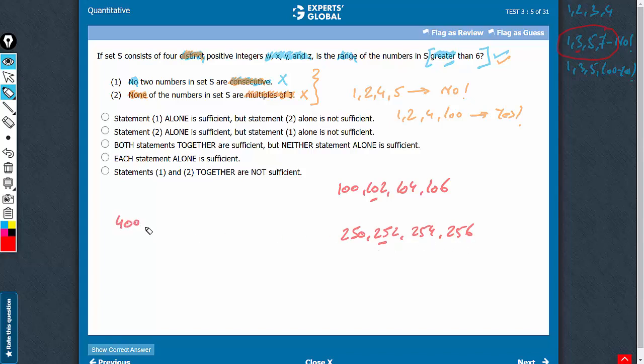For example, if we have 400, the next integer cannot be 401 because consecutive integers are not allowed because of statement 1. 402 cannot be taken because multiples of 3 are not allowed because of statement 2. So the next integer must be 403, and then 404 cannot be taken because 404 would be consecutive to 403. 405 cannot be taken, 405 is a multiple of 3. So the next integer possible is 406, and then 407 cannot be taken, 408 cannot be taken, 409 has to be taken, and you see the range turns out to be 9, which is greater than 6.